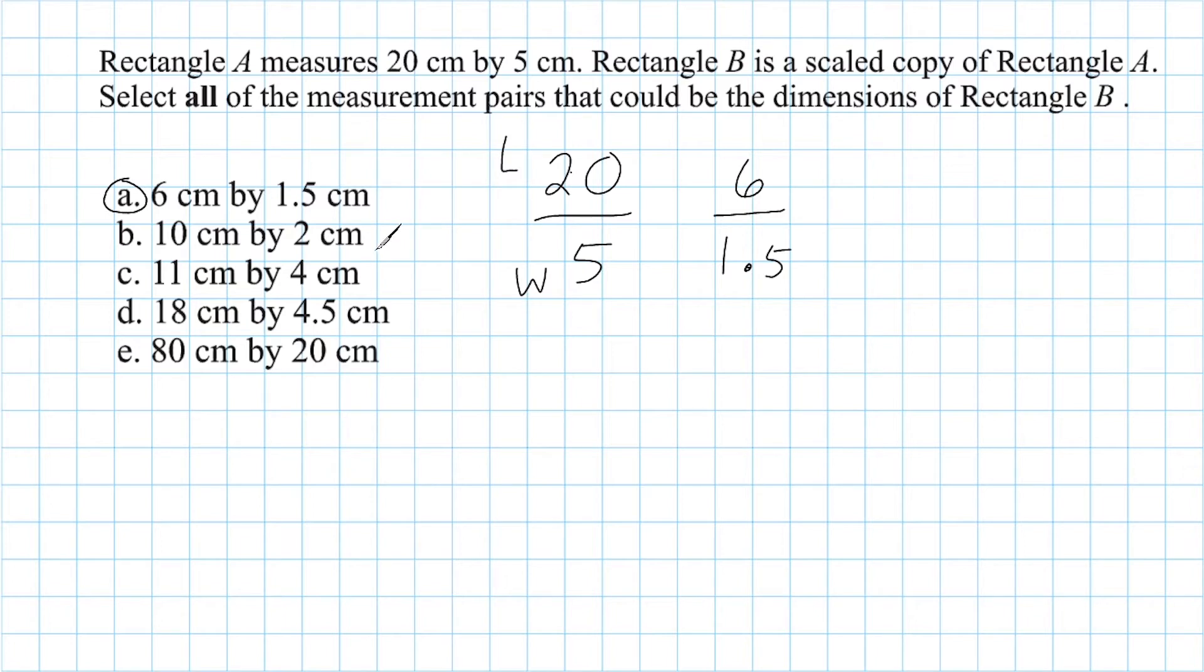Alright, now let's go ahead and test option B, which has a length of 10 and a width of 2. Now, we would say for this rectangle, its length is 5 times greater than its width. So we would say that this rectangle is not similar or proportional to rectangle A. So we should not select option B.